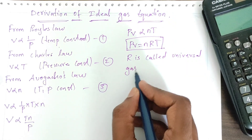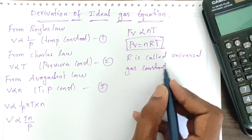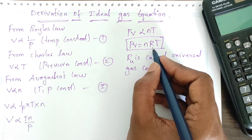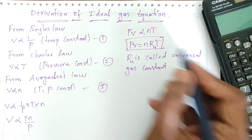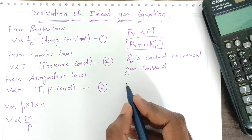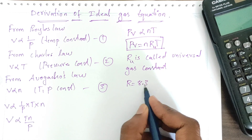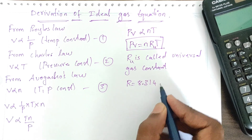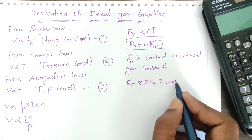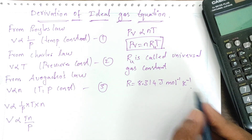I will write R_U for universal gas constant. The value of R is R_U = 8.314 joule per mole per Kelvin. So this is the value of the universal gas constant.